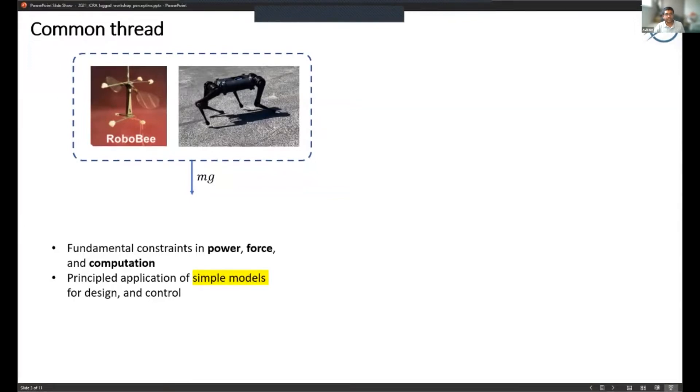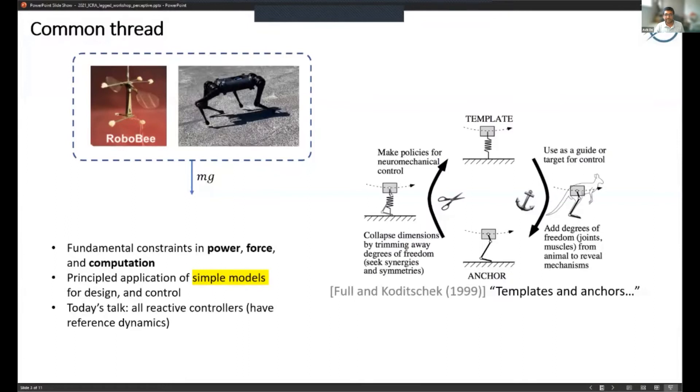I've always looked at these as principled applications of simpler models to both design and control. I'll talk a bit about that with the new perspective of perceptive locomotion today. There are many terms to describe these hierarchical structures with simplified models, but I'll probably be using terms called template and anchor. This is from a paper with my advisor and Bob Full in 1999.